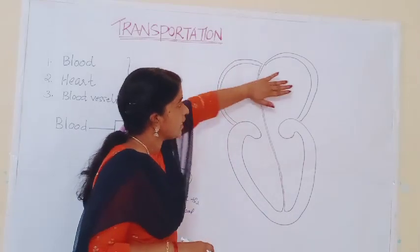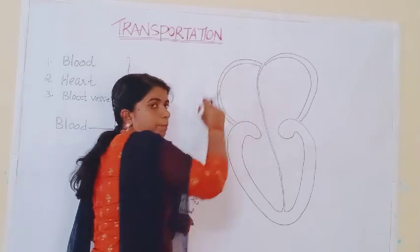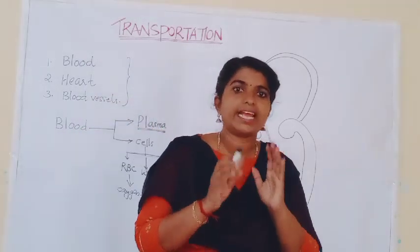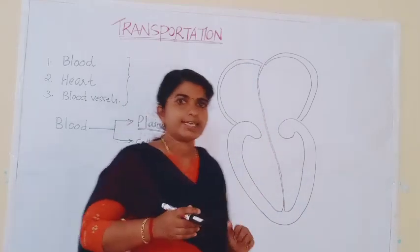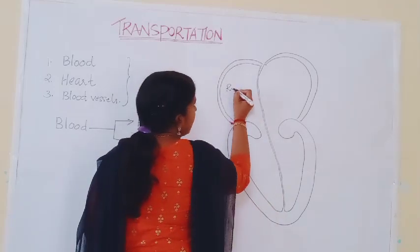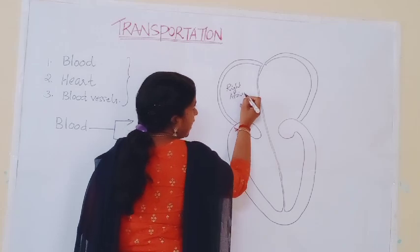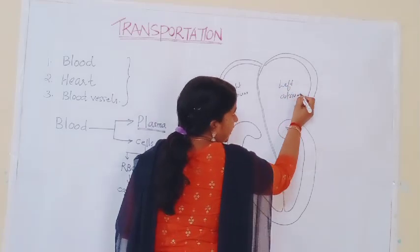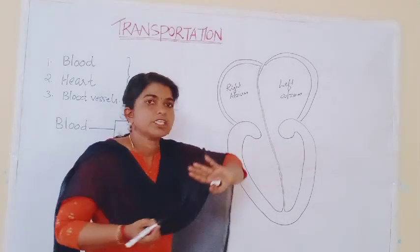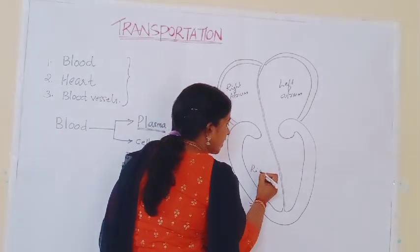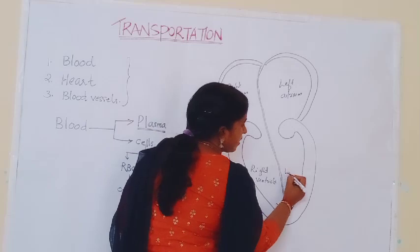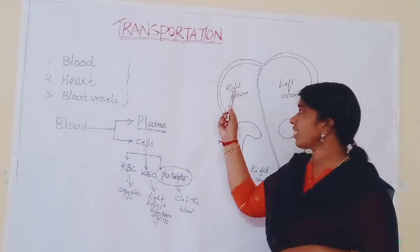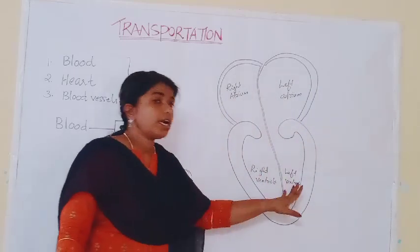Here in the diagram you can see four chambers. The upper chambers — two upper chambers — are known as atria (singular: atrium). This side is the right side, so this is known as the right atrium. This side is the left atrium. The lower chambers are known as ventricles. So this is the right ventricle and this is the left ventricle. The four chambers are: right atrium, left atrium, right ventricle, and left ventricle.